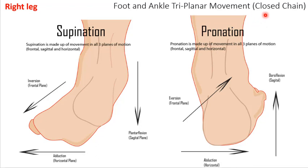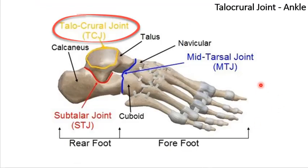In closed chain — when the distal segment is not free to move, meaning your foot's on the ground — compared to open chain where your foot is not connected to the ground, pronation and supination are different. The next couple of slides look at that. We're going to go joint by joint and look at the axis of rotation in a little more detail to help understand where we're at with the foot and ankle.